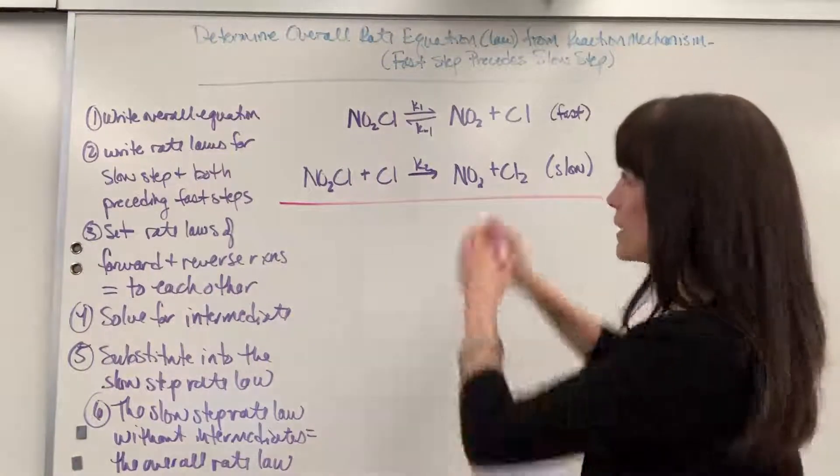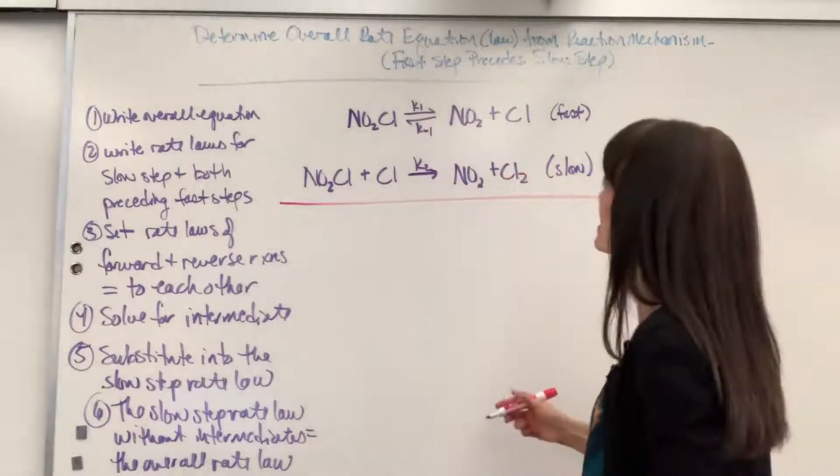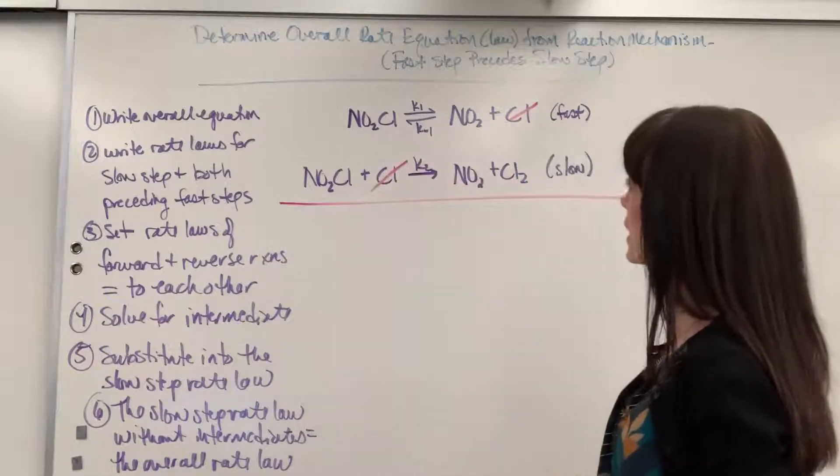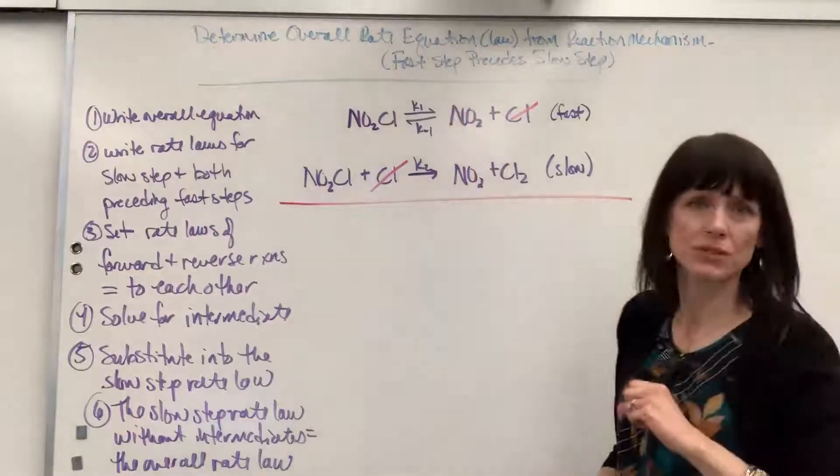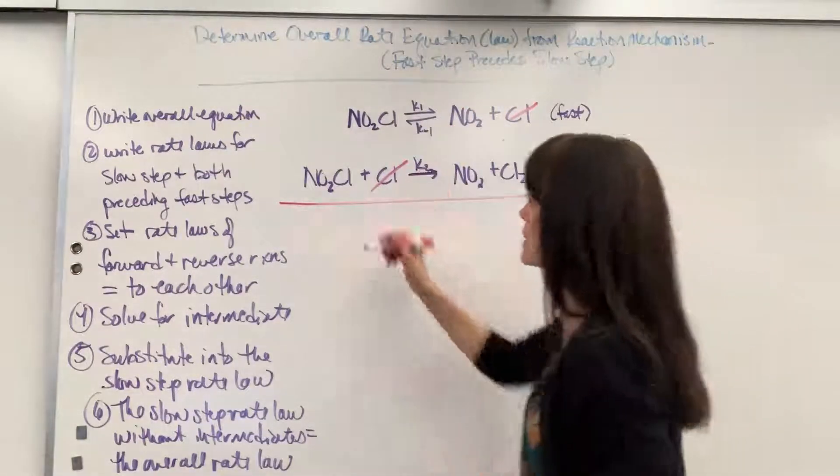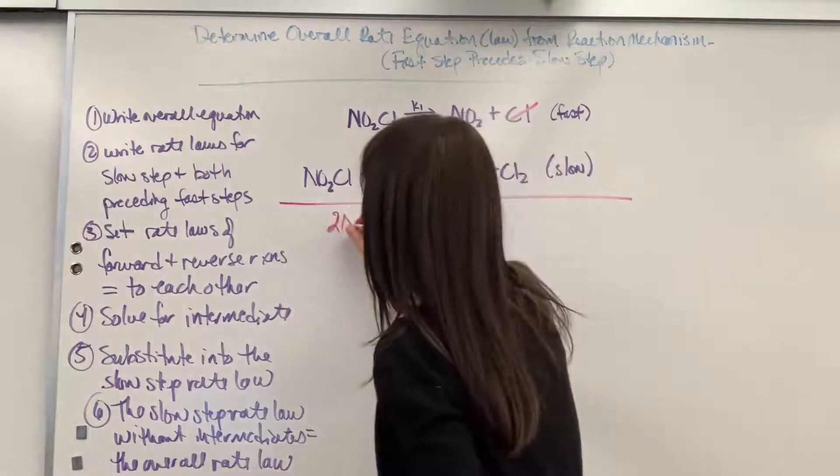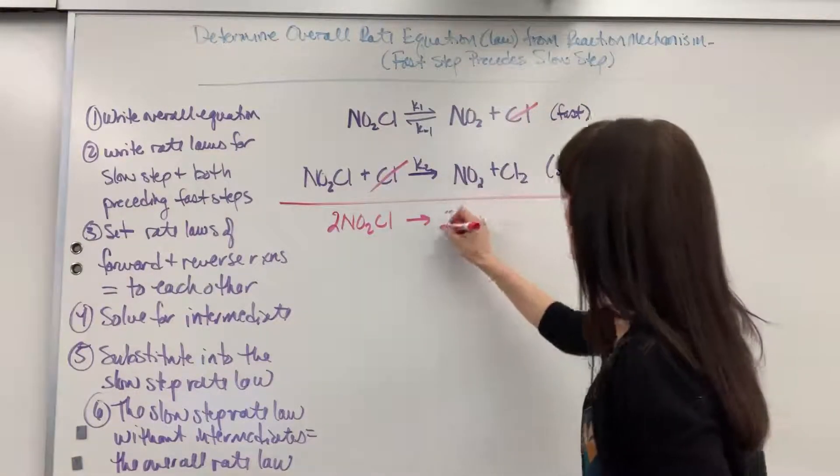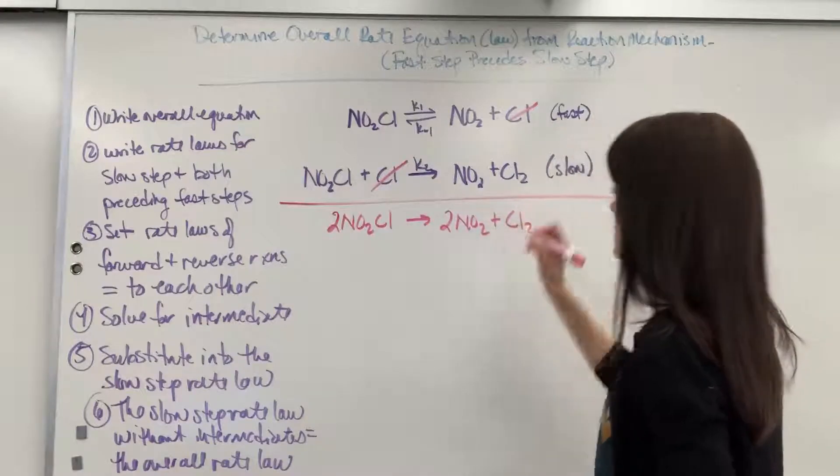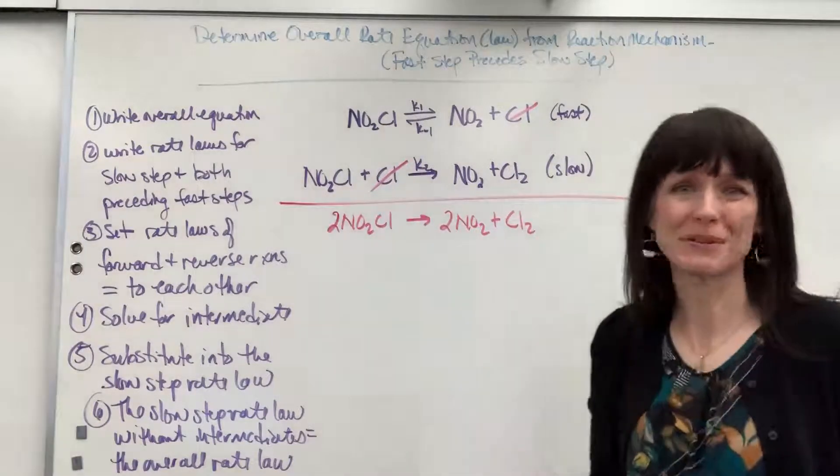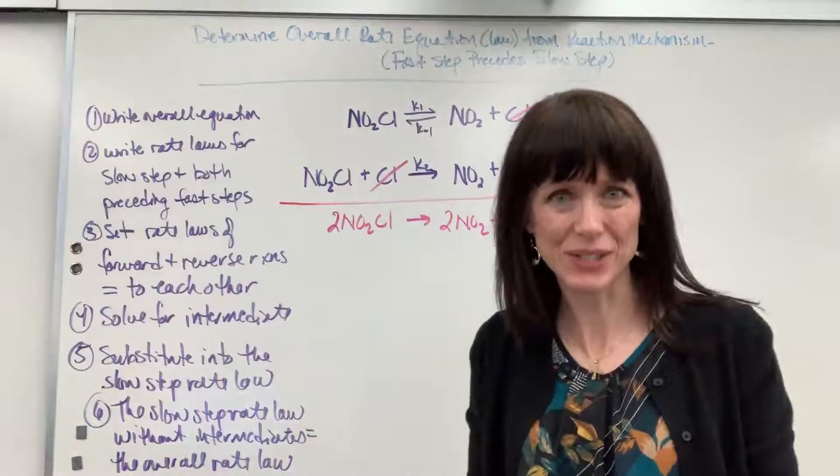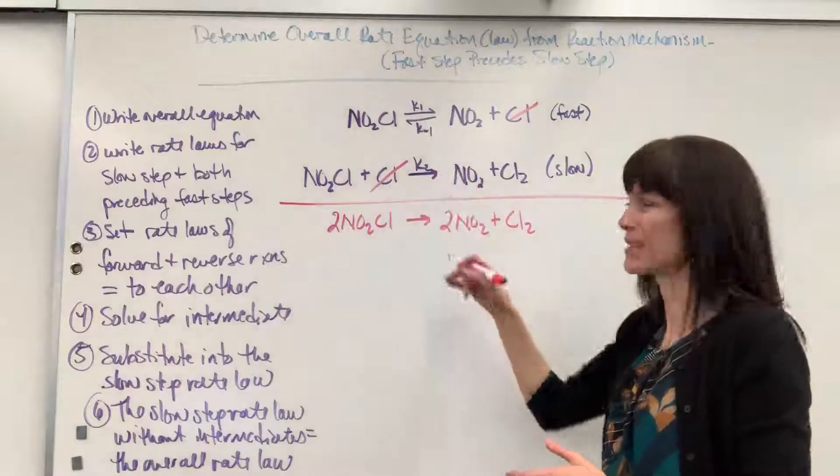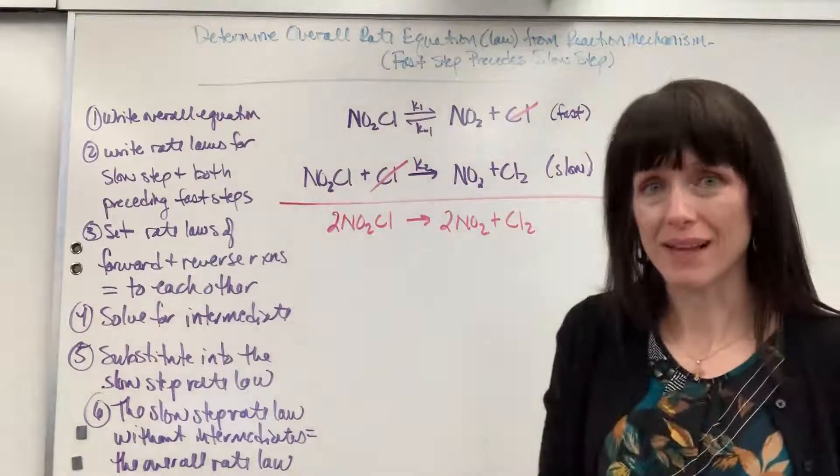We're going to add these elementary steps. I'd like to see if there's anything that can cancel. Yep, sure enough, that Cl right there can cancel. Everything else we're just going to add together. So everything on the reactant side, we're going to have two of the NO2Cl, and that produces two of the NO2 plus the Cl2. That's my true chemical reaction, how it exists in nature.